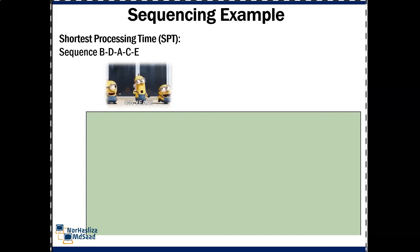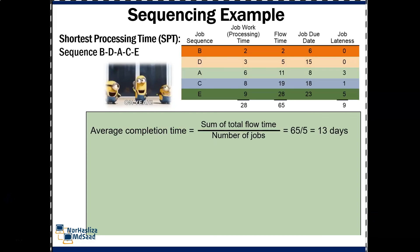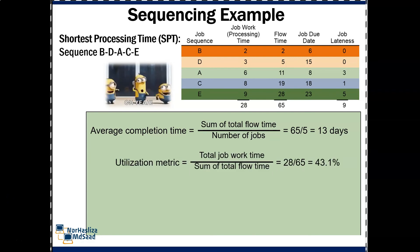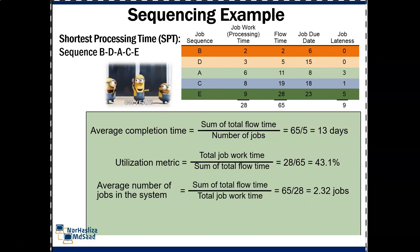Finally, we can calculate the average completion time, the utilization metric, the average number of jobs in the system, and finally average job lateness.